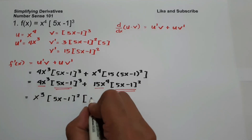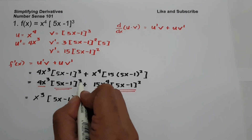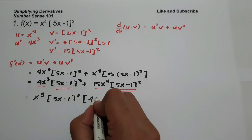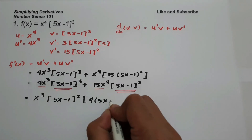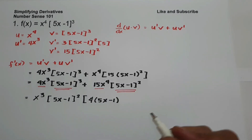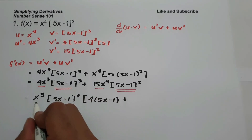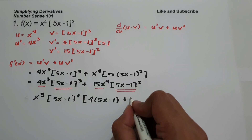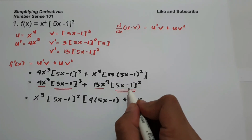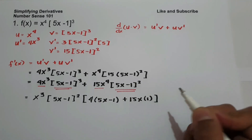So let us divide. 4x³ divided by x³ is 4. And 5x minus 1 raised to 3 divided by 5x minus 1 squared — all we have to do is subtract the exponents — gives 5x minus 1. Then 15x raised to 4 divided by x³ is 15x, and 5x minus 1 raised to 2 divided by itself is 1.